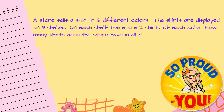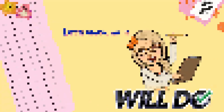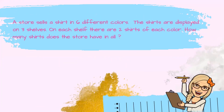Ready to begin? Let's go! The problem says that the store has 6 different colors of shirts, and they display the shirts on 3 shelves, and they put 2 shirts of each color on each of the shelves.